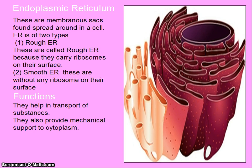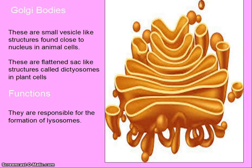Golgi bodies. These are small vesicle-like structures found close to the nucleus in animal cells. In plant cells, these are flattened sac-like structures called dictyosomes. Function: they are responsible for the formation of lysosomes.